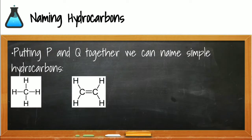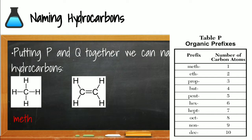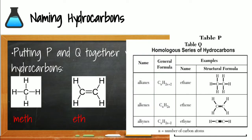We can put reference table P and Q together to get a hydrocarbon name. In this first example, there is one carbon, so the prefix is meth. In the next example, there are two carbons, so the prefix is eth. Looking at reference table Q for the suffix: the first structure has only single bonds between carbons, so it is an alkane ending in -ane — that is methane. The next structure has a double bond between carbons, so it is an alkene ending in -ene — that is ethene.